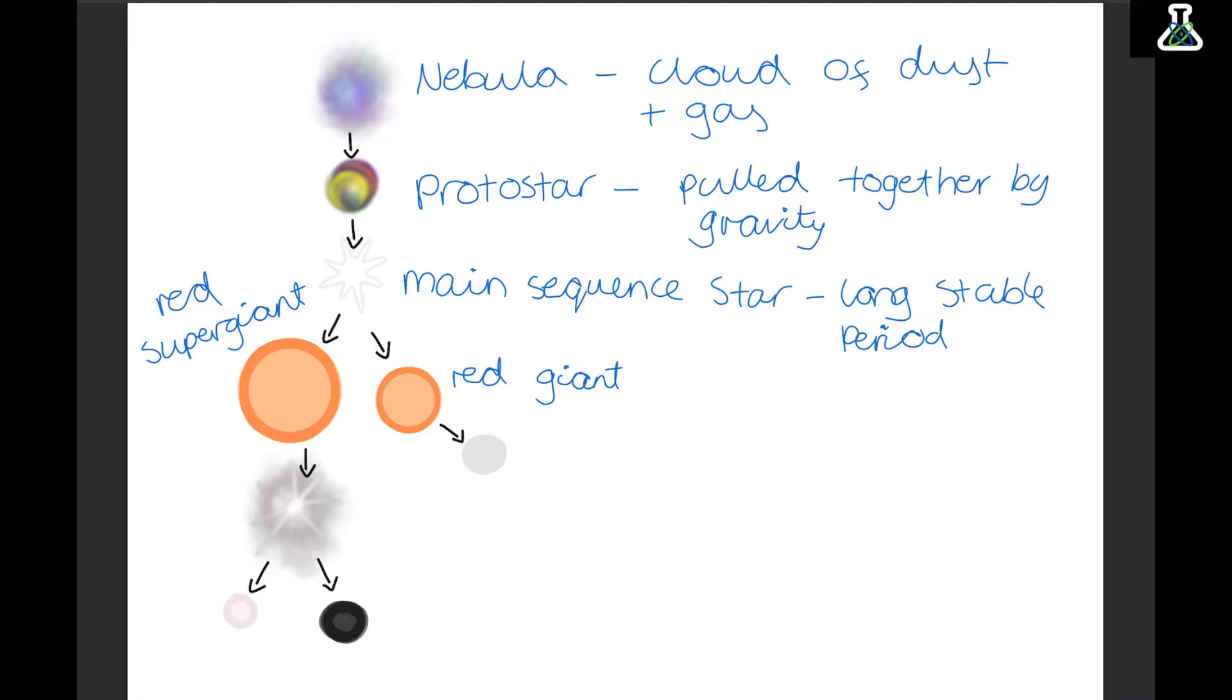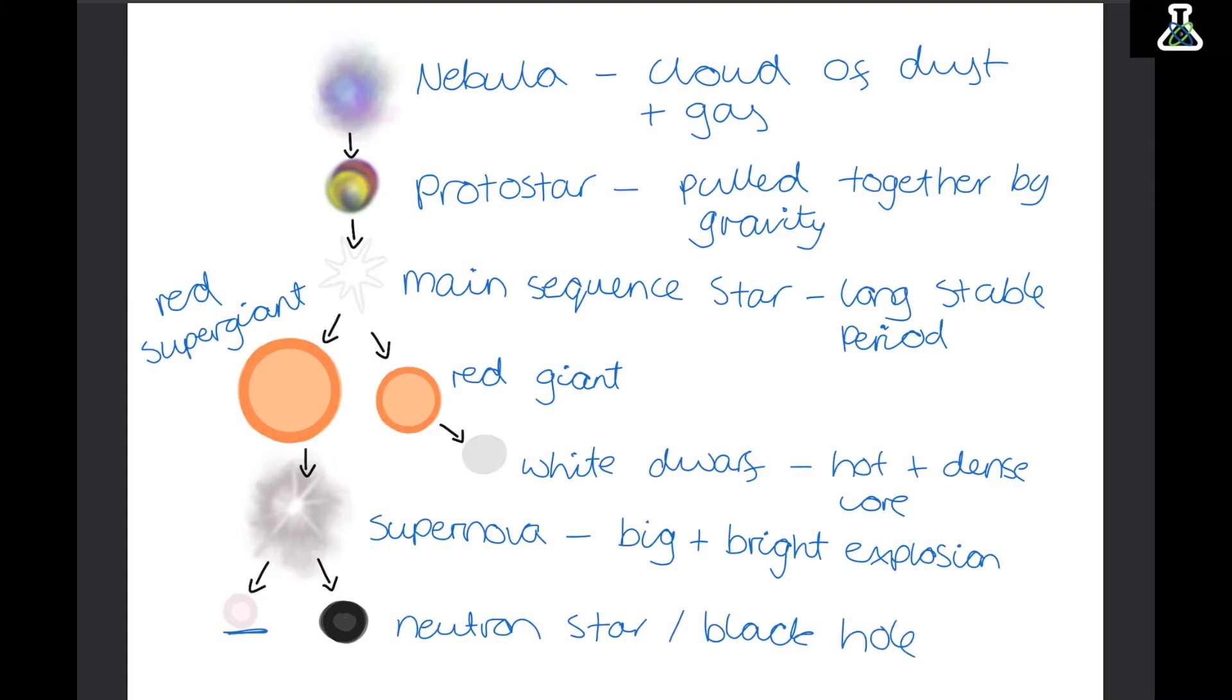Now a red giant can then form a white dwarf. And this is just the really hot and dense core of the star. But a red supergiant then goes on to be a supernova. And this is a really big and bright explosion. After the supernova it can become one of two things. It can become a neutron star, which is this tiny little star over here. Or it can become a black hole. So they are a series of changes that a star will go through over its lifetime.